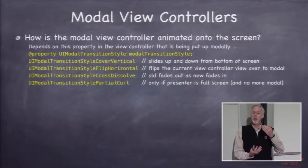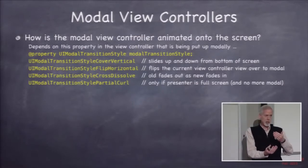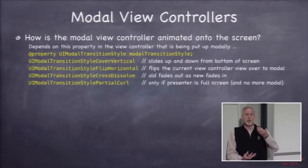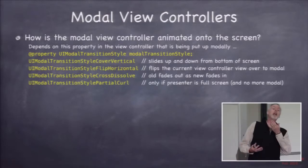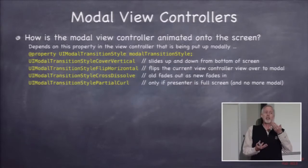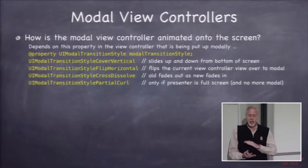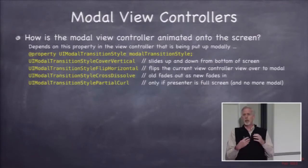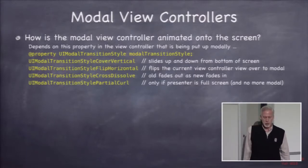You want to check the documentation if you want to use the partial curl — it puts some limitations on you. Once you curl, you can't go modal again and can't present another one. Also, the view that curls up doesn't get viewDidDisappear because it doesn't actually disappear — it just curls up and is still on screen. Normally a modal view comes up and fully covers the one behind it, causing viewDidDisappear, but with the curl, that's not the case, so be careful.